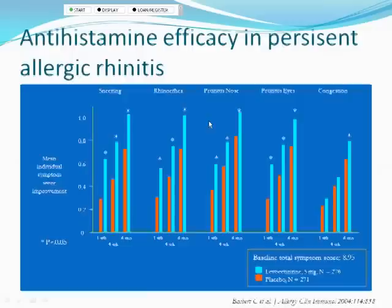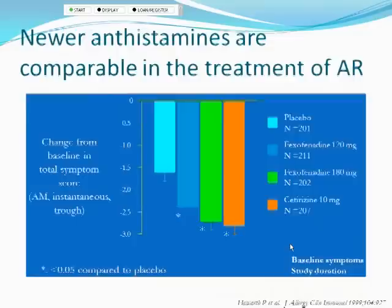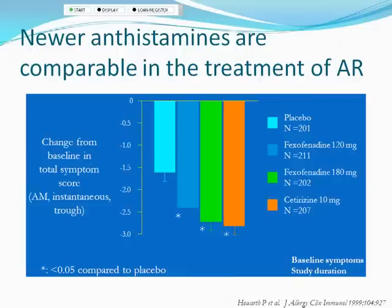A good antihistamine controls sneezing, rhinorrhea, itchy nose, and itchy watery eyes, but is less effective for congestion — you'll rely more on decongestants and nasal steroids for that. Second- and third-generation antihistamines — fexofenadine, cetirizine, levocetirizine, desloratadine — are fairly equivalent in total nasal symptom scores versus placebo. Generic cetirizine is a very cost-effective option — a year's supply from a warehouse club for around $17.